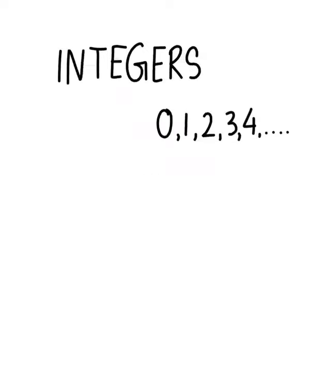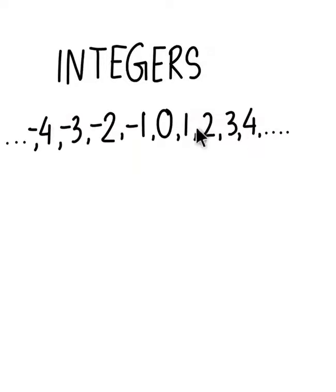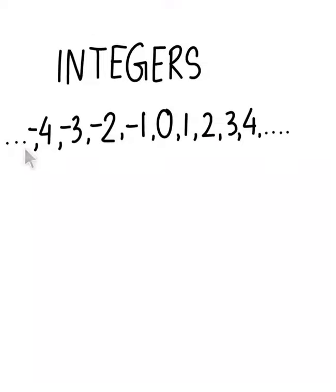Then we have the integers. Integers, like the whole numbers, have 0, 1, 2, 3, 4 and move on up till positive infinity. They also have negative numbers like minus 1, minus 2, minus 3, minus 4, and move towards the left towards minus infinity.